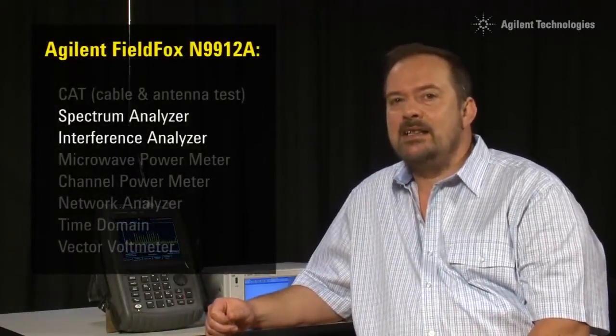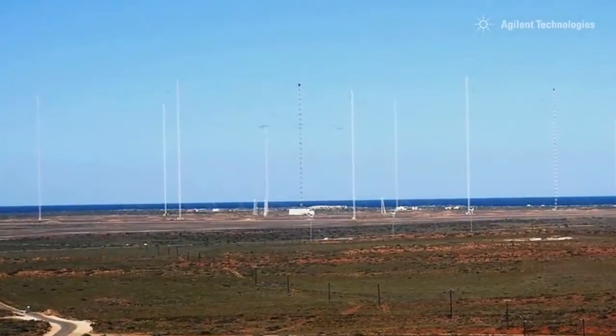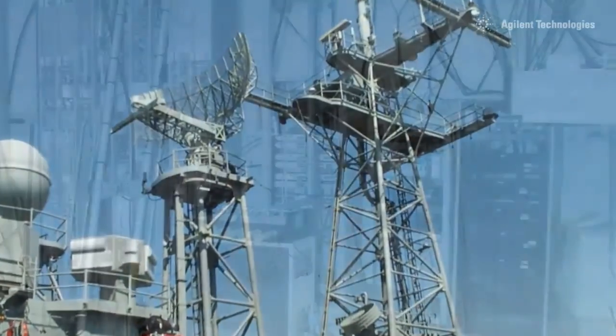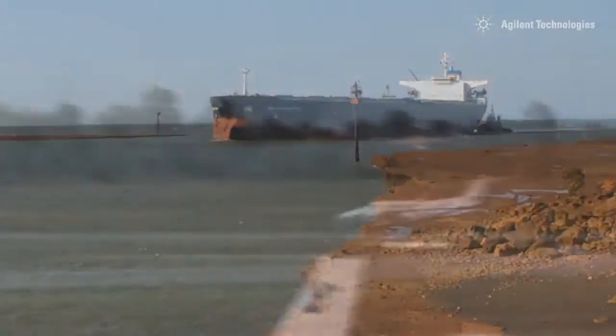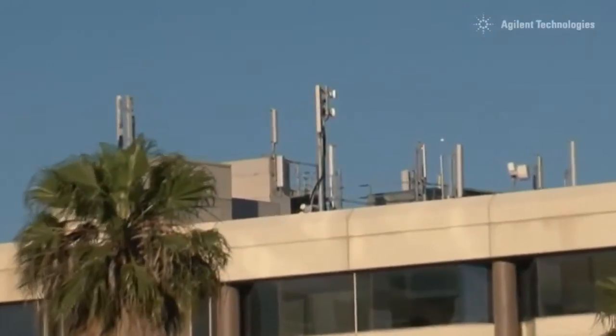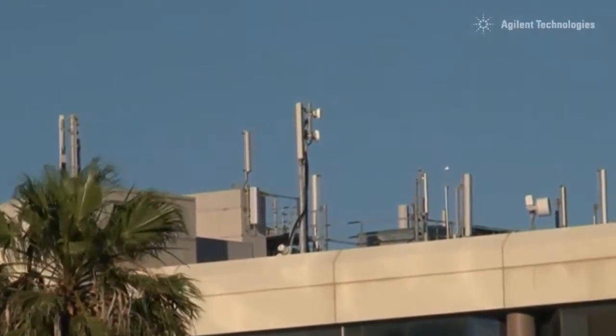The Spectrum Analyzer covers 100 kHz to 6 GHz and is usable down to 5 kHz, so we can measure everything from VLF, HF, broadcast, land mobile radio, marine and air bands, all mobile phone bands, and Wi-Fi up to 5.8 GHz.